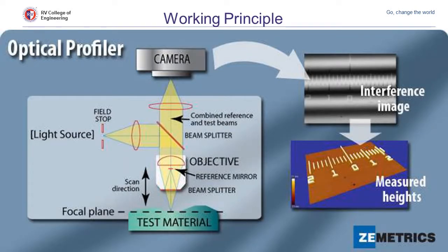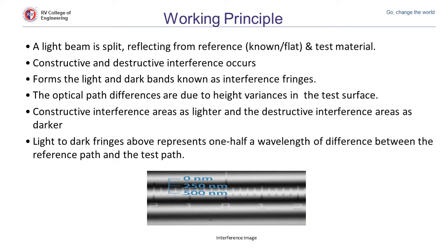Here is the working principle of profilometry. The light source is split by a beam splitter into two parts: the first one goes to the camera and the second one to the test specimen. It is then reflected back and merged together to give an interference image. In the interference image we can see dark and bright fringes which give the height of the surface roughness. The light beam is split into two parts — one reflected from the reference and the other from the test specimen — and constructive and destructive interference occurs, forming dark and light bands known as interference fringes. The optical differences are due to the height variation of the test specimen, which represents the surface roughness. Constructive interferences appear lighter and destructive interferences appear darker.